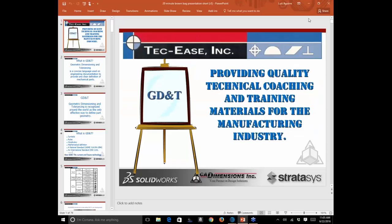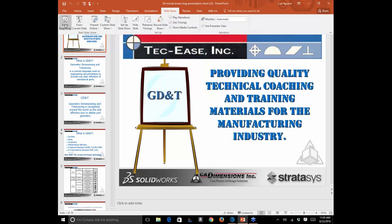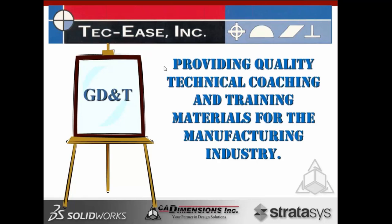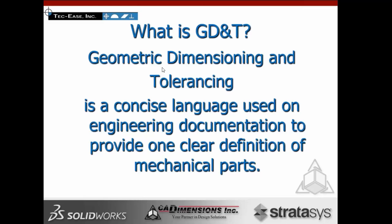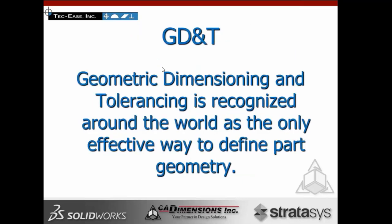Thank you. Welcome everybody — it's a pleasure to be presenting today. I am with TechEase. We're going to talk about GD&T today. We provide technical coaching and training materials for manufacturing and industry. Many ask: what is GD&T? Geometric dimensioning and tolerancing is a concise language used on engineering documentation to provide one clear definition of mechanical parts. With GD&T, it's clear — you don't end up with multiple definitions of design intent.